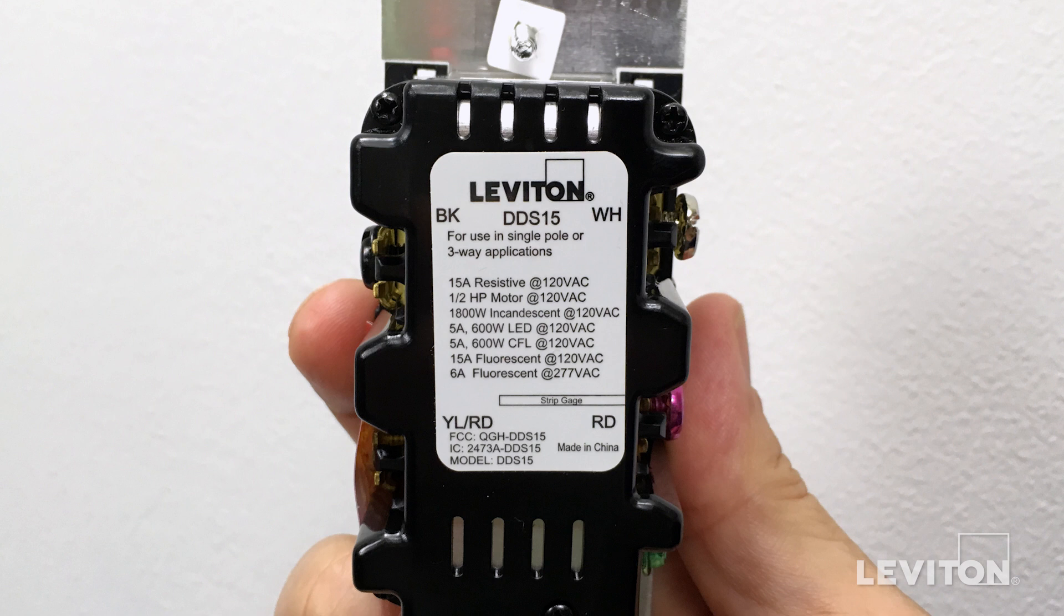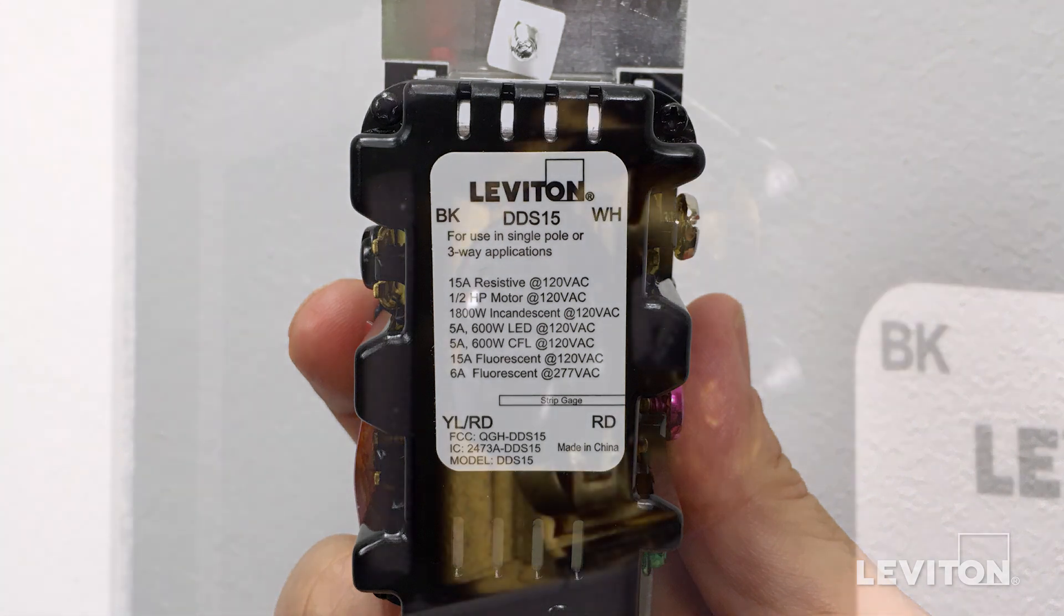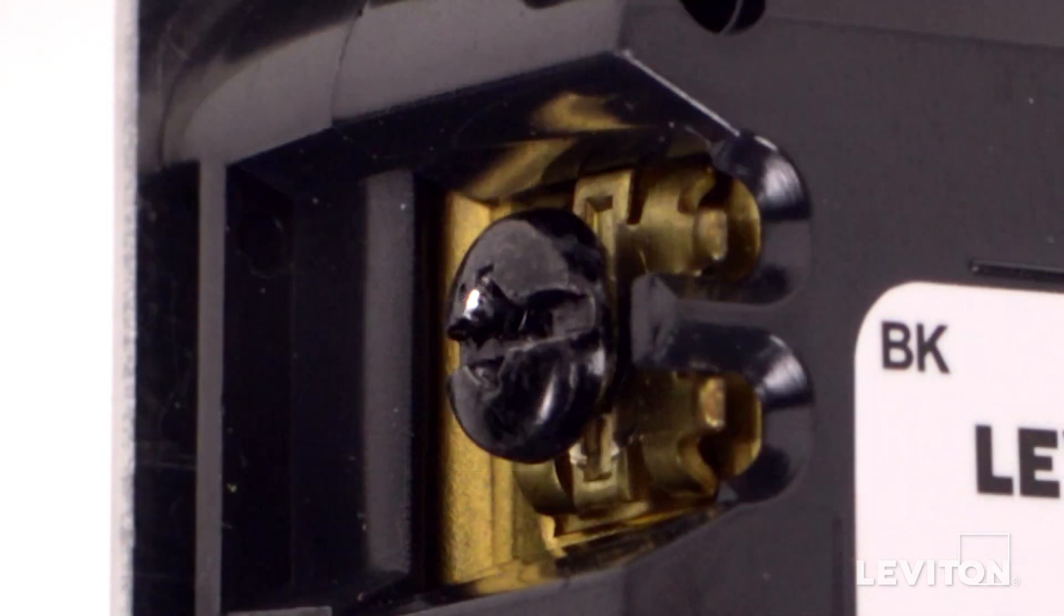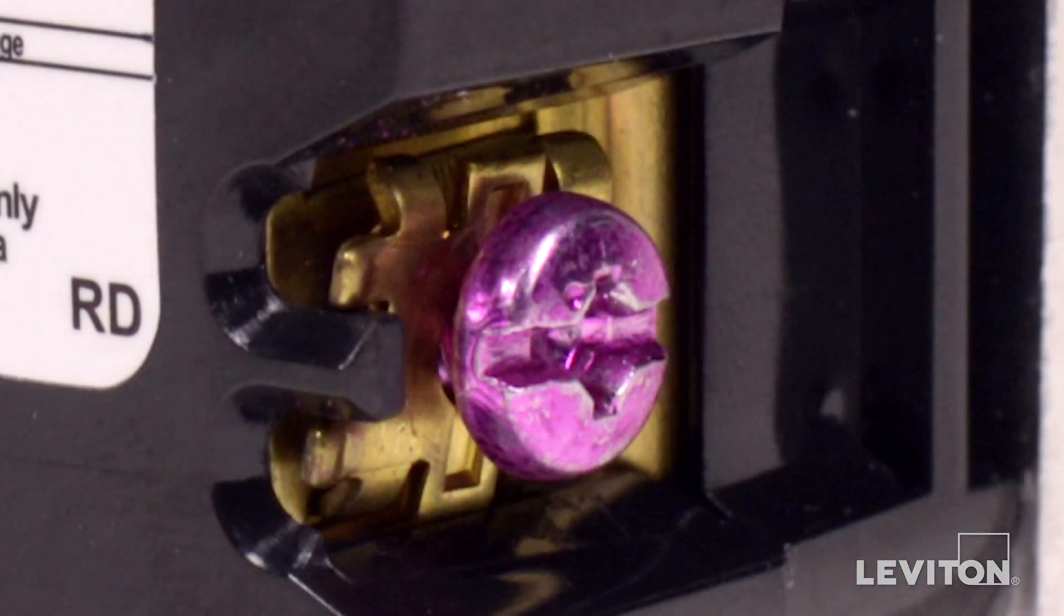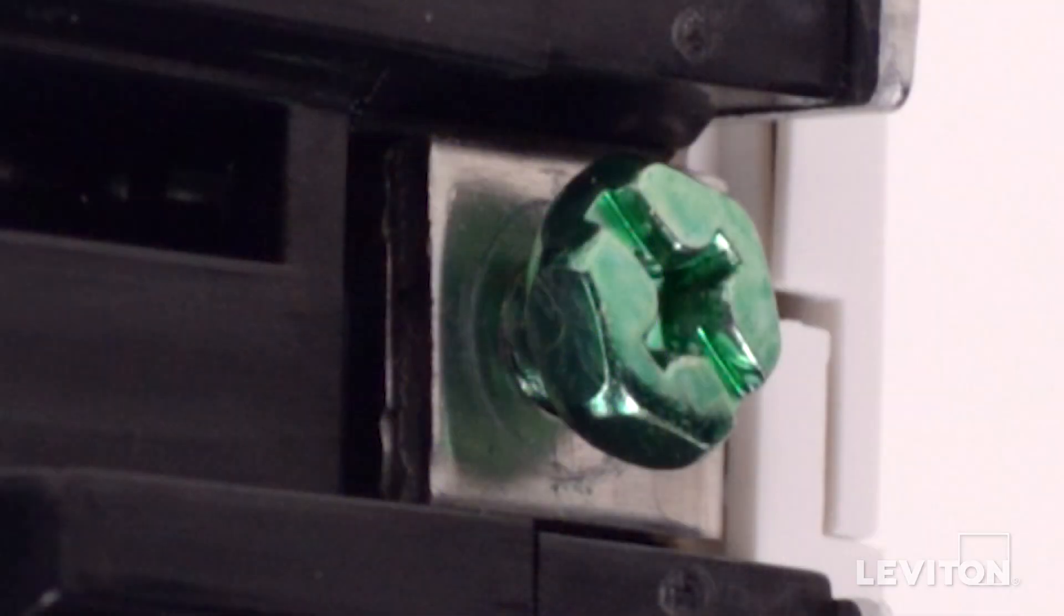Before wiring, it's important that you identify the terminal screws on the device to ensure that you are wiring it correctly. The black or BK is for the line or hot wire. The silver or WH terminal is for the neutral wire. The red or RD terminal is for the load. And the green terminal is for the ground wire.